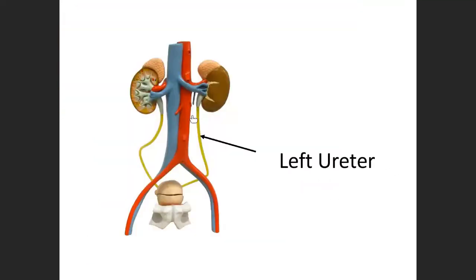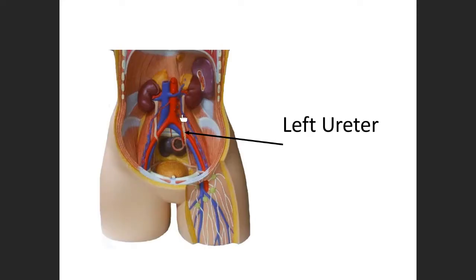This yellow tube leading from the left kidney down to this structure here — that is the left ureter. The ureters drain the kidneys into the urinary bladder. Here you can see on this model the left ureter. Now it doesn't look quite yellow, it's more of a tannish color. But look at where it's coming from — it's coming right here from the kidney, descending all the way down to the urinary bladder.